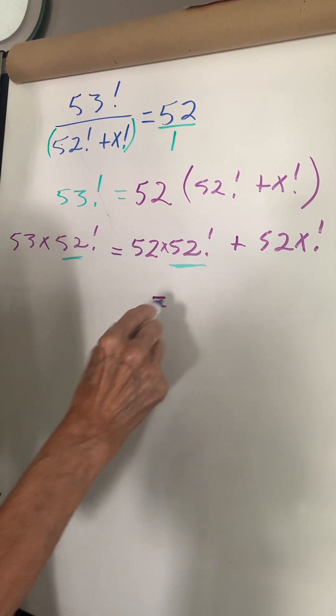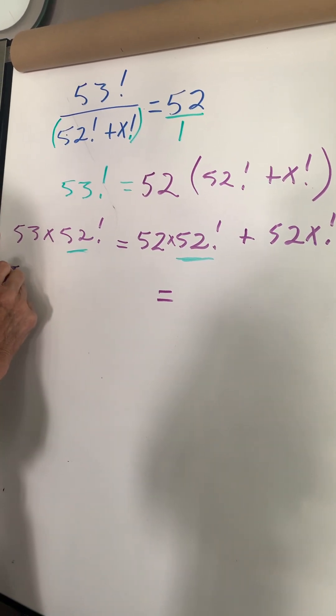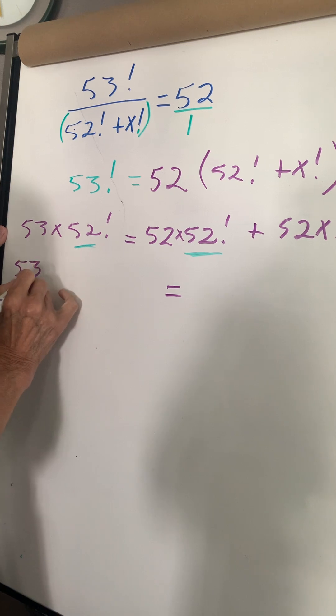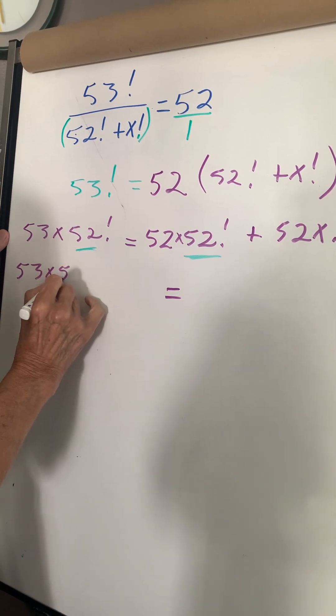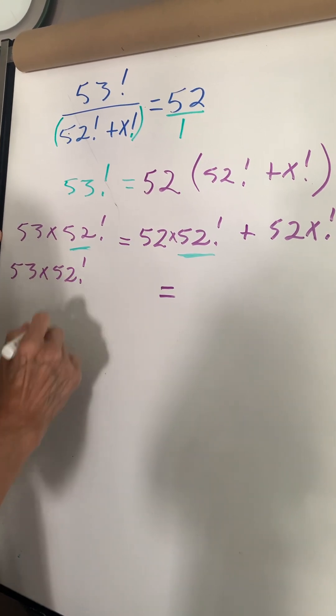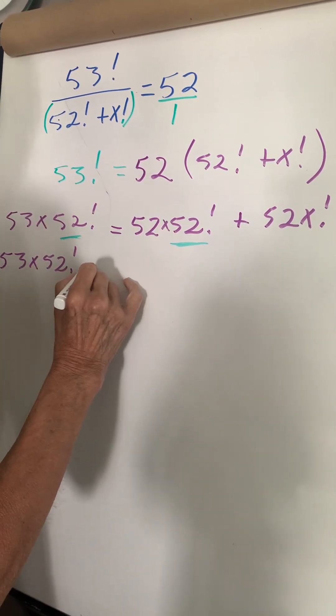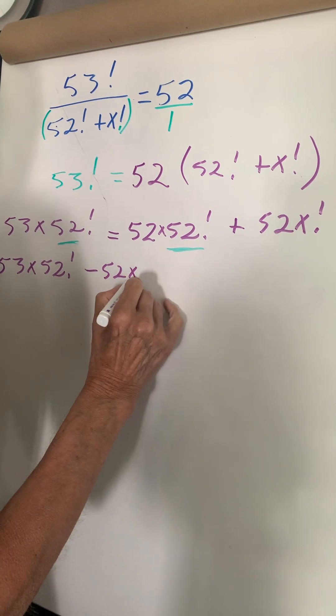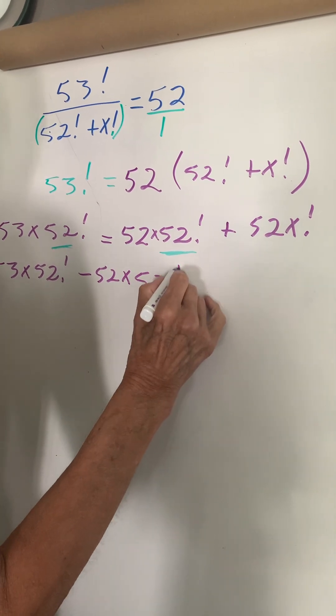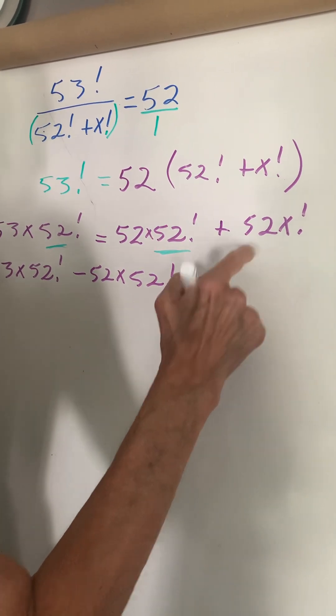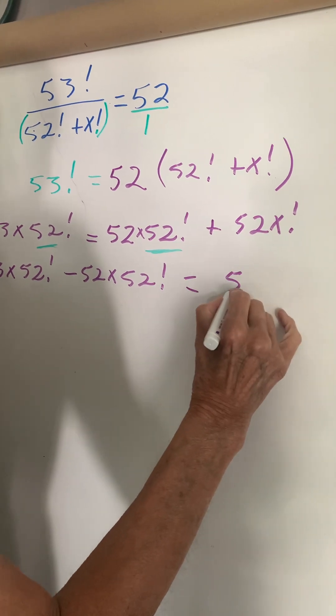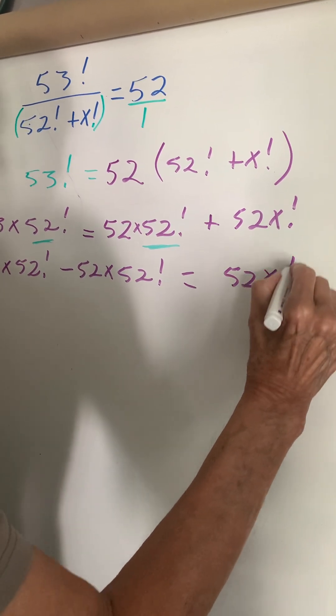I'll move my sign over. So I have 53 times 52 factorial. Transpose positive minus 52 times 52 factorial equals 52 times x factorial.